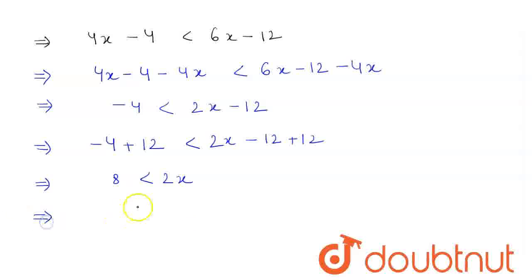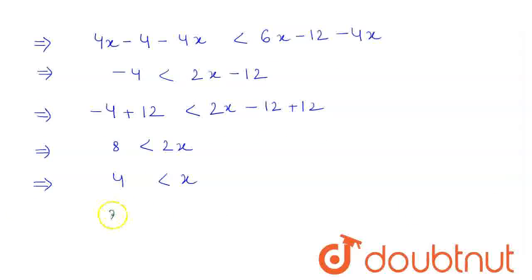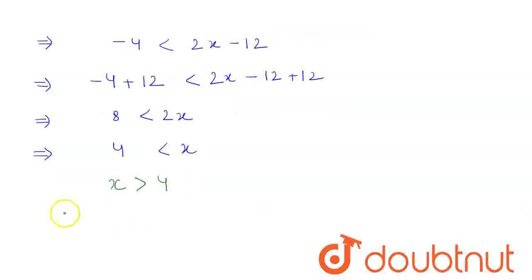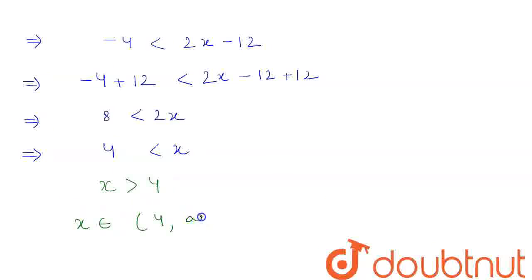Now, if we divide the equation by 2, we get 4 < x. So from here, we get that the value of x must be greater than 4. Our range is x belongs to (4, +∞). We have an open bracket because there is no equal to sign in our inequality. So this is our required answer.